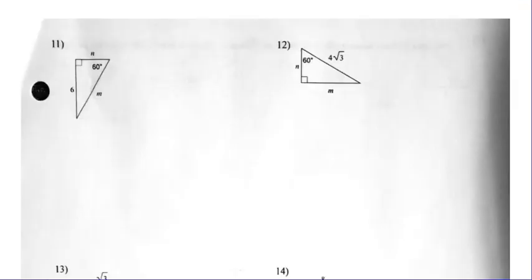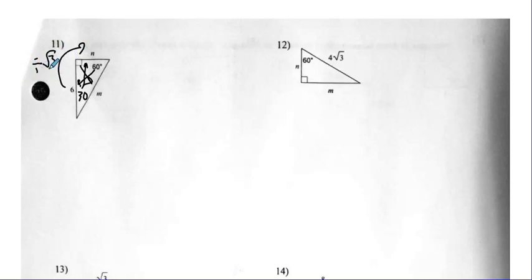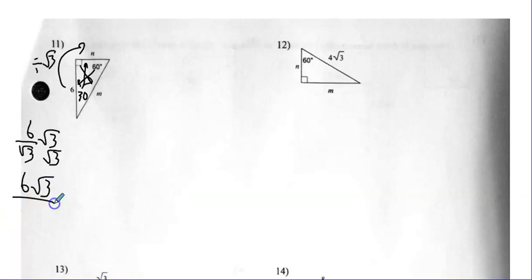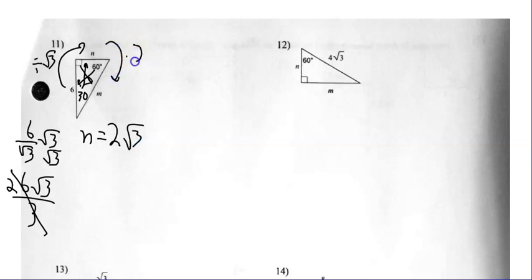Number eleven — I have a 30-60-90. Short, long, hypotenuse. I always want to go to the short first, which means I'm dividing by radical three. So six divided by radical three — I must rationalize. Remember, radical three and six don't cancel; one's an outside number, one's an inside. So that gives me six radical three over three, which reduces to two. So N is two radical three. And then from there to the hypotenuse I multiply by two — the outside number only. So M is four. The radical three stays.